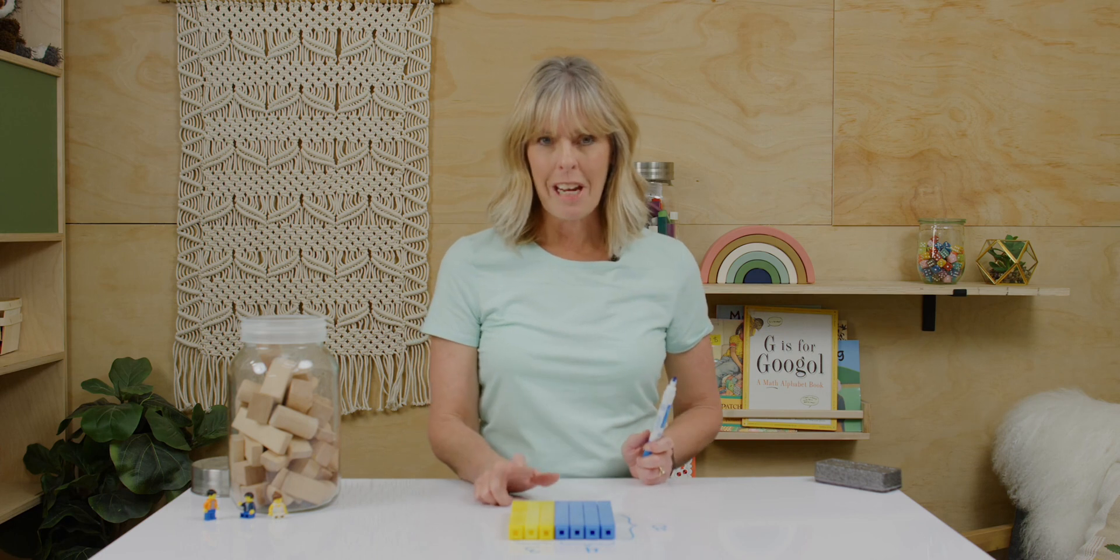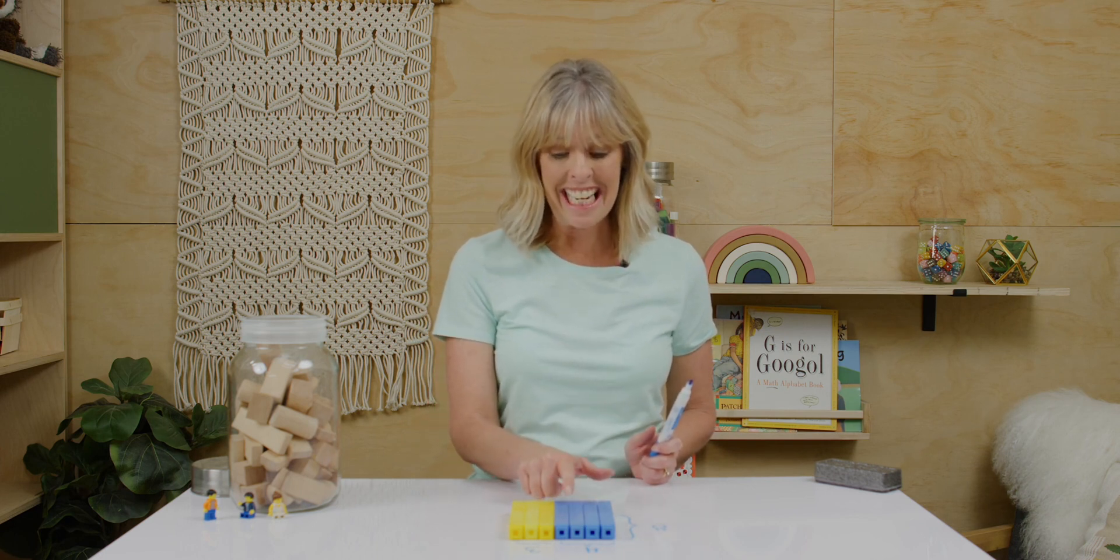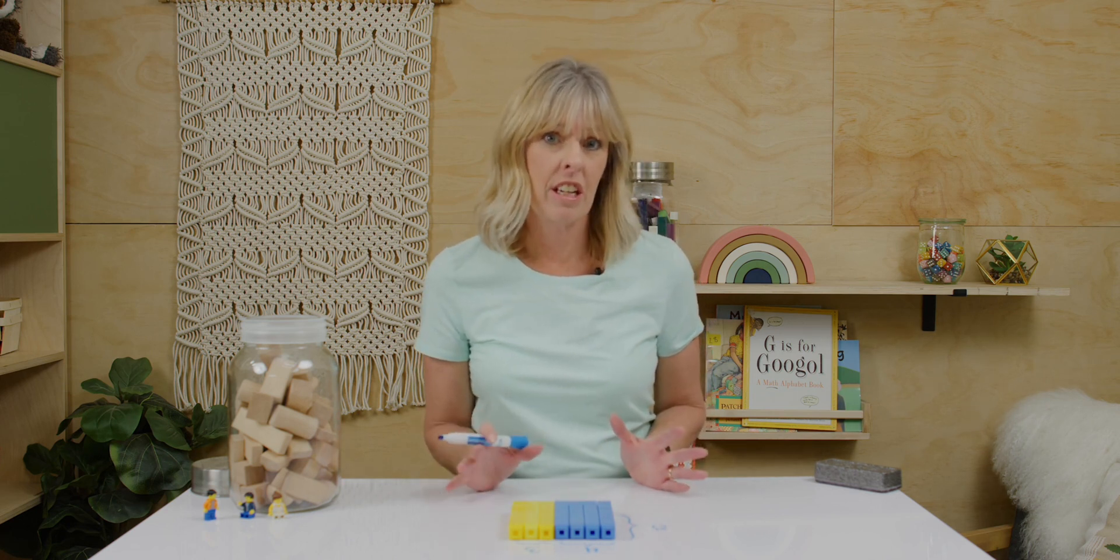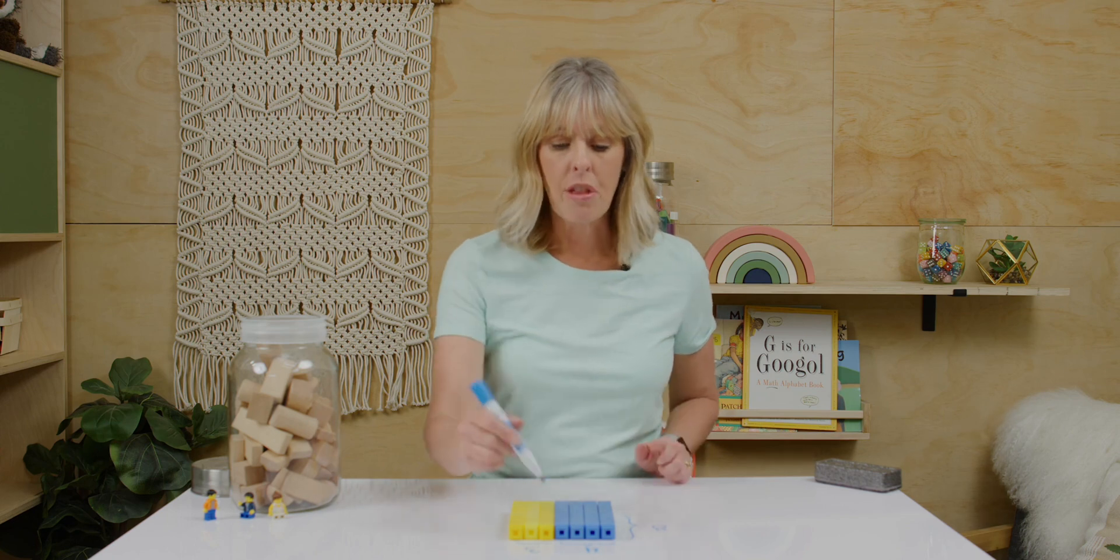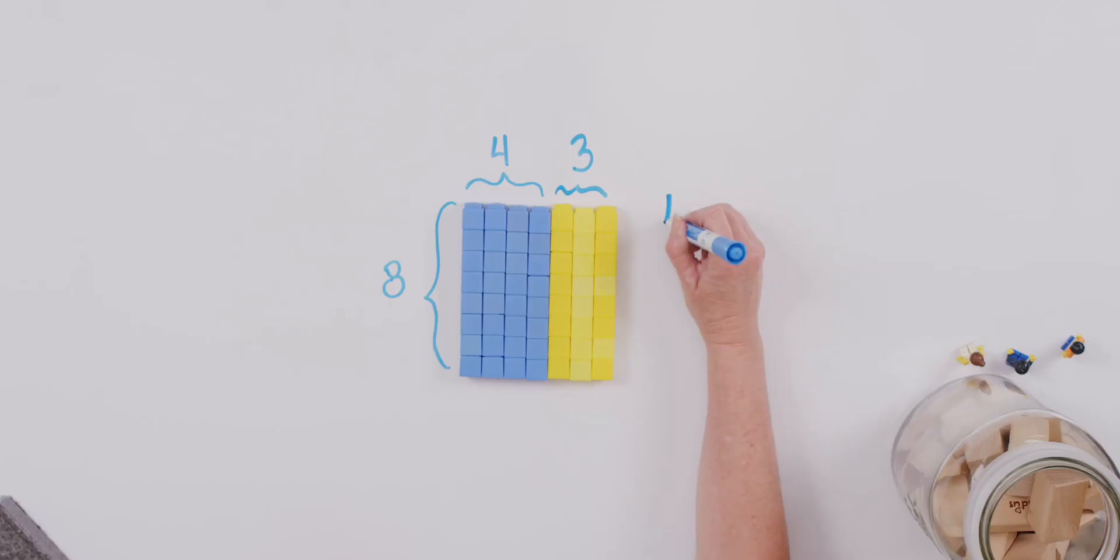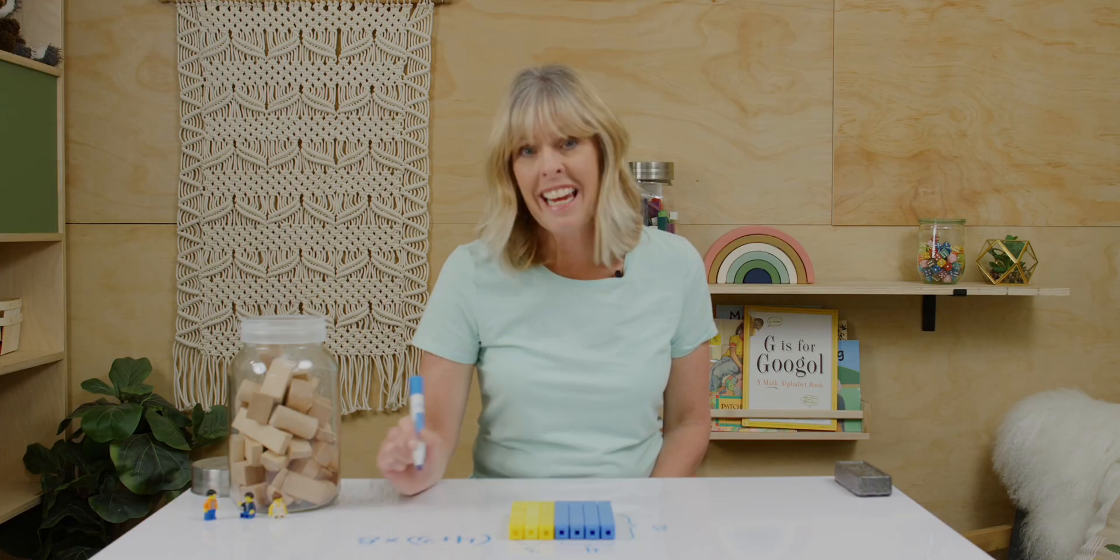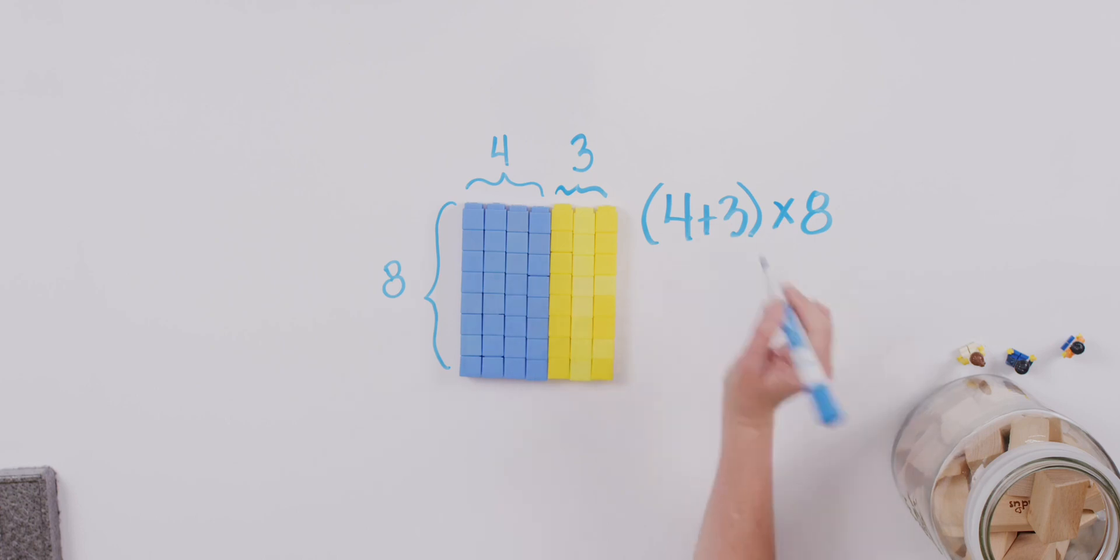I'm guessing that none of you counted them 1, 2, 3, 4, 5, 6, 7, 8, 9, 10, 11. I hope not. I hope you use some of the strategies we learned in our last lesson. For example, maybe some of you thought, you know what, I'm gonna add my 4 and my 3 together first. And we would multiply by 8. And as we work through this, 4 plus 3 is 7. And if I multiply that by 8, what would I get? Great! 56.